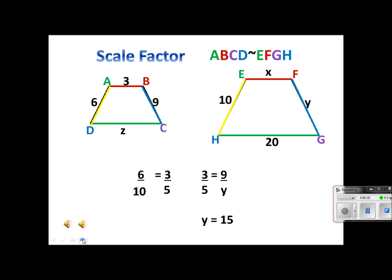Let's do another proportion using the exact same scale factor, this time solving for Z. Z corresponds with 20, color-coded in green, and I can confirm it from the letter order: DC corresponds with GH. Z goes with the smaller trapezoid, consistent with how we set up the scale factor. Cross multiplying gives 5Z equals 60, and dividing both sides by 5 gives Z equals 12.